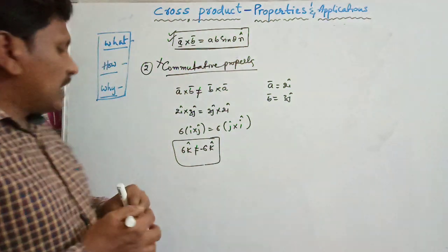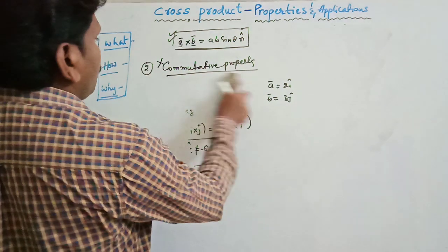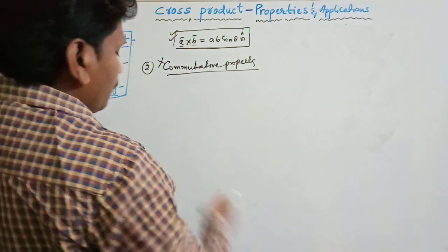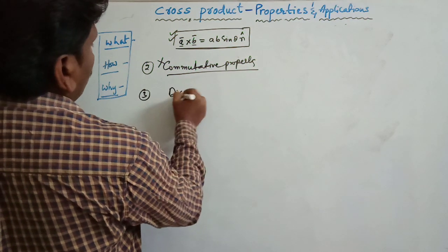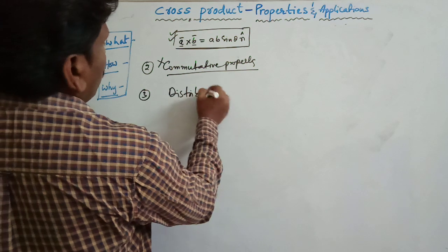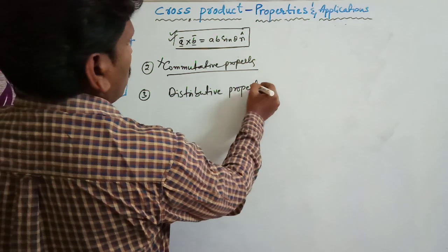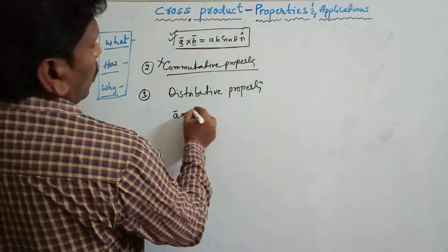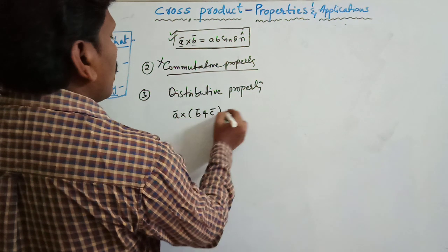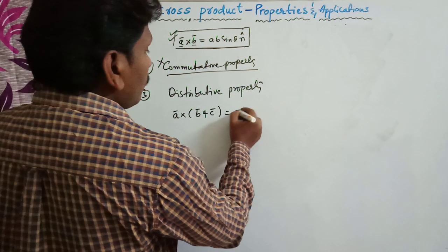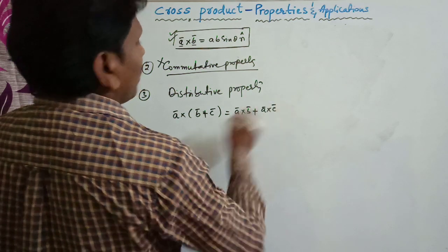The third property is the distributive property. The distributive property states: A bar cross (B bar + C bar) = A bar cross B bar + A bar cross C bar. We need to check whether the cross product obeys this law.